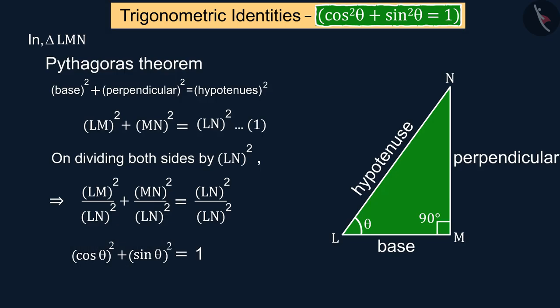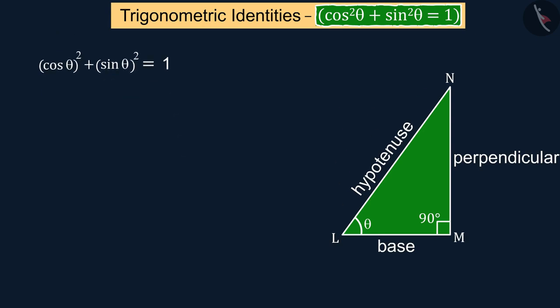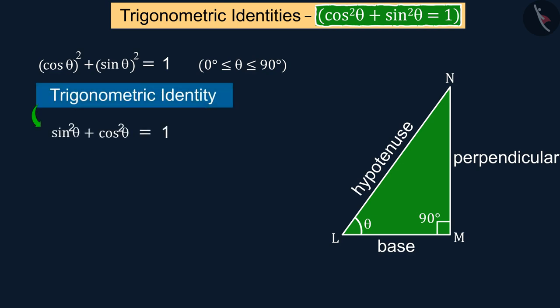So, we can say that the square of cos theta plus the square of sin theta is equal to 1, where the value of theta is greater than or equal to 0 degrees and less than or equal to 90 degrees, which is a trigonometric identity and it is represented by equation 2.